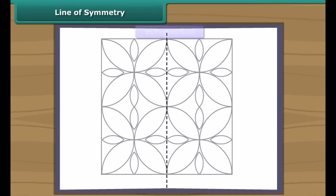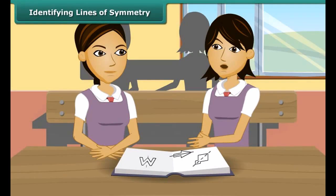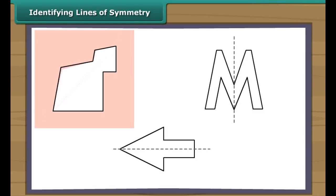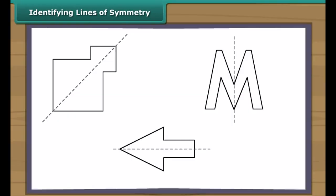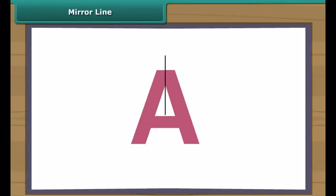So we will see that this figure is symmetrical, and this line is the line of symmetry. And in these figures, these are the lines of symmetry. A shape has a line of symmetry when one half of it is the mirror image of the other half.